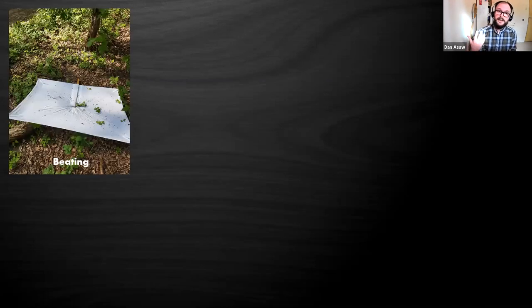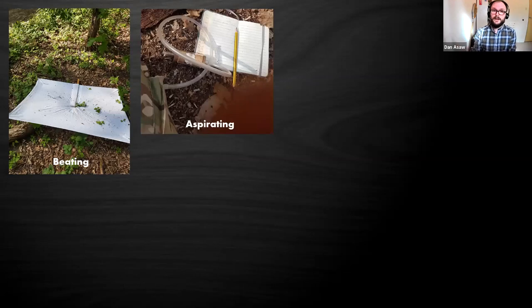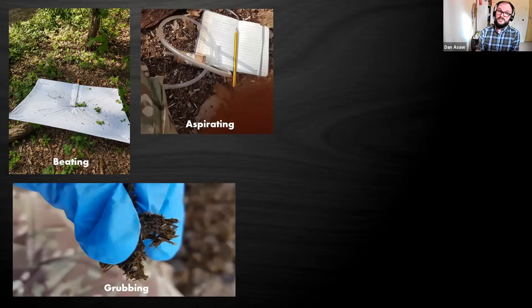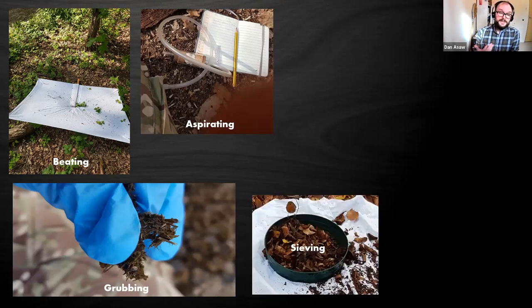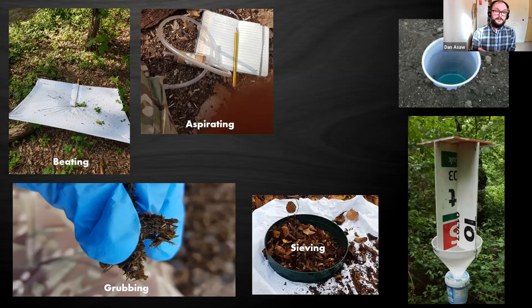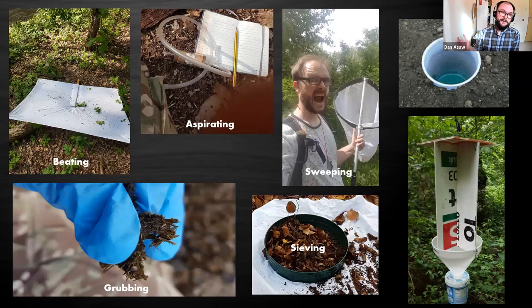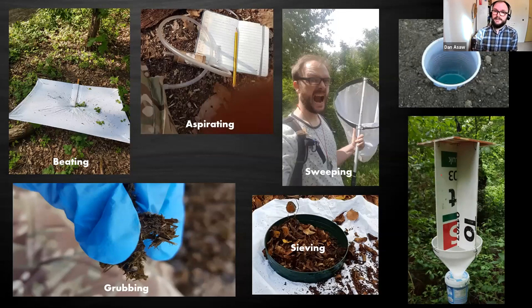There are 4,000 beetles in the UK, and there are loads of different ways to find them. There's beating, where you bash stuff out of a tree. You can aspirate stuff using your pooter. You can grub around using your hands - and there's a reason I've got gloves on. We also use sieving, which is another good way, and lots of different types of traps. My favourite by far is probably sweeping - a big old net running around a field. There's nothing quite like it.